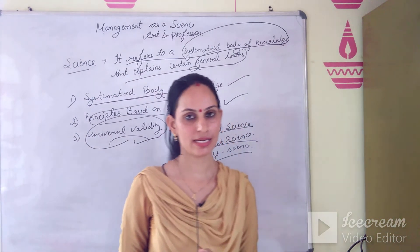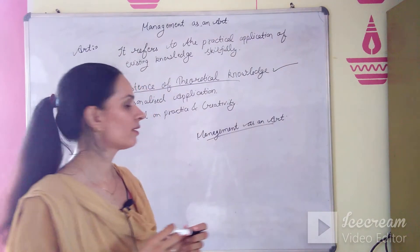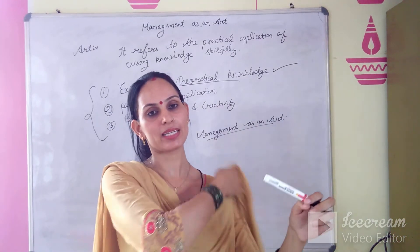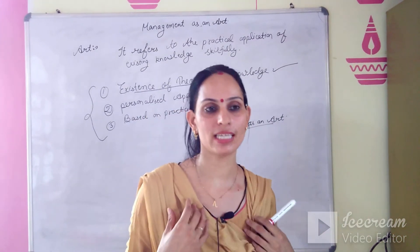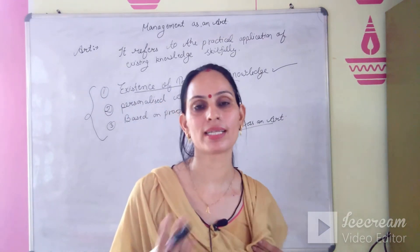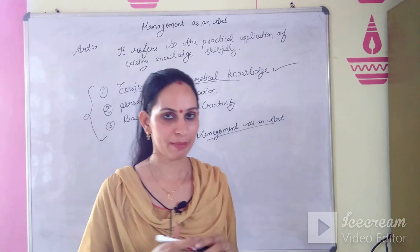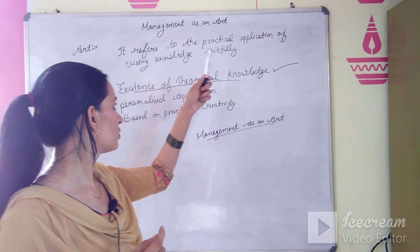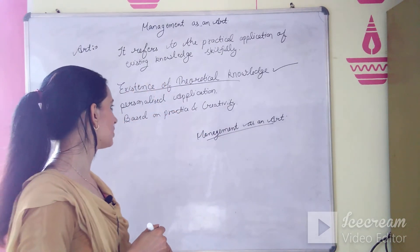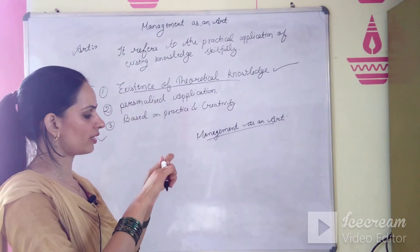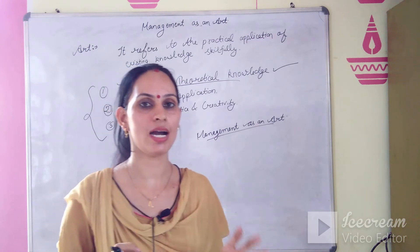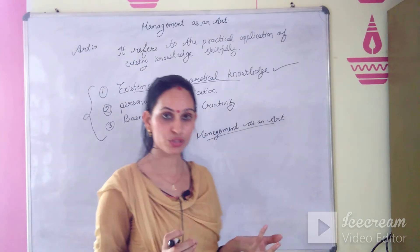Now we will discuss management as an art. Art refers to the practical application of existing knowledge skillfully. There are three features of art. The first is the existence of theoretical knowledge — there are existing theoretical principles and theories in art. Similarly, management has its own theories and principles, so this feature is fulfilled by management.